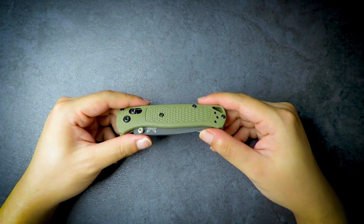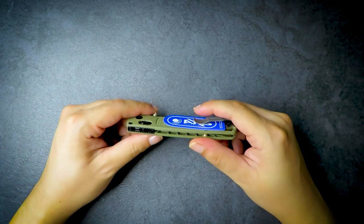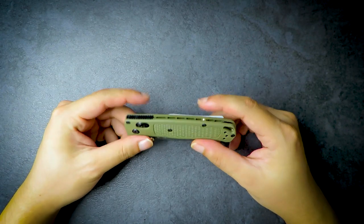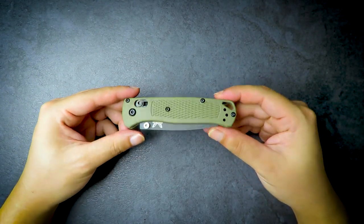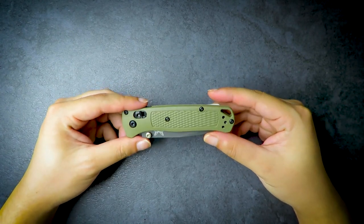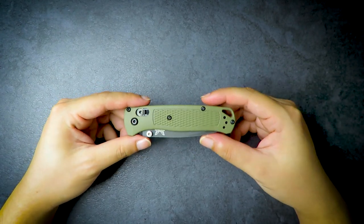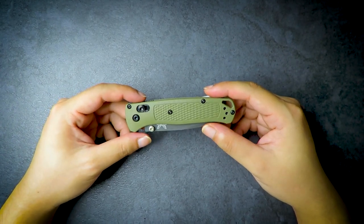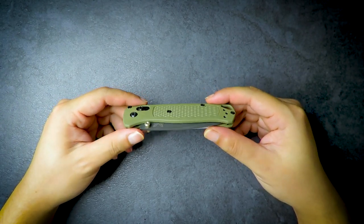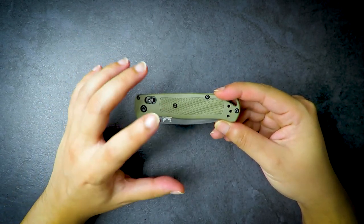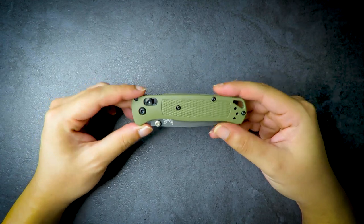Why I went for the Benchmade Bugout: initially I wanted the Griptilian or mini Griptilian, but the Bugout is far more popular right now and I like the dimensions better. I know there's a CF Elite or all black version. I'm not a fan of the blue one with satin finish blade, but I do like green and black or green and dark grey combos.